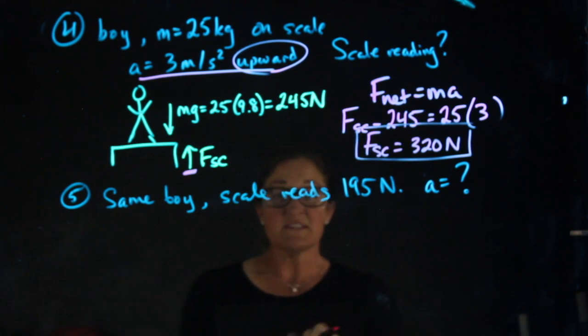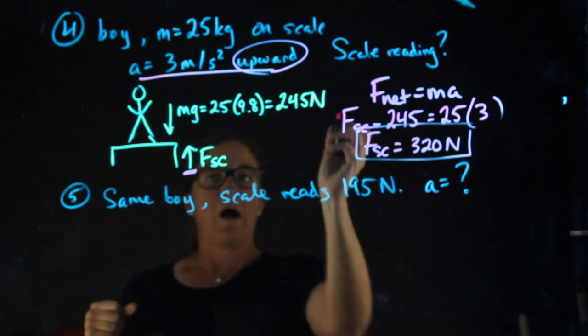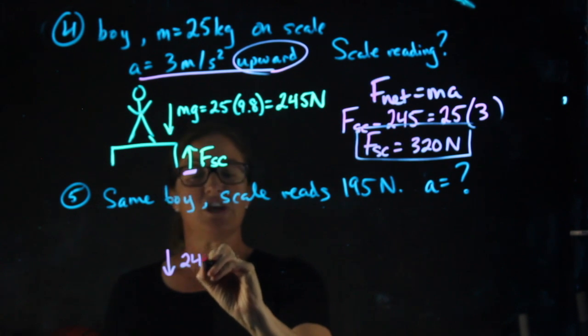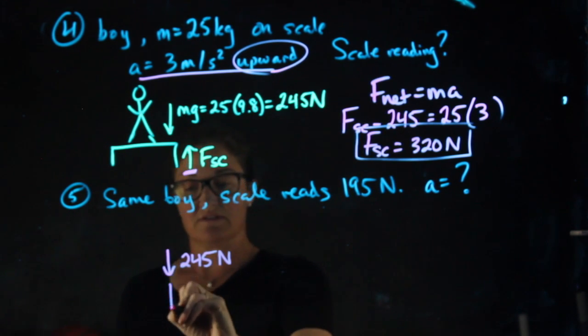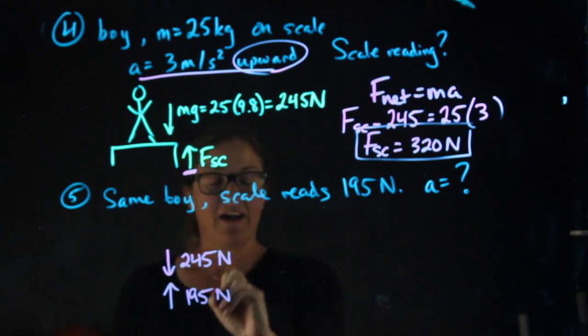For B, same boy, but the scale reads 195 newtons. So I'm looking at the same setup. My downward force is still mg and is still 245 newtons, but now my upward force is only 195 newtons.